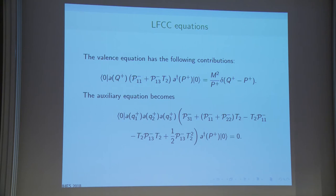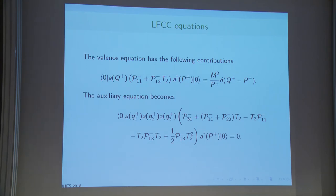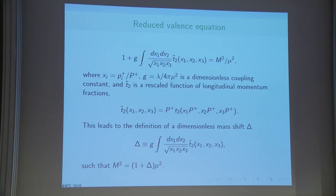Also, the kinetic terms are not the same. In LFCC, the physical mass appears for all constituents, but for this Fock state truncation the bare mass is used in the three-body sector — unless of course we apply sector-dependent renormalization. LFCC contains this vertex, which is a partial summation of all orders. To solve both the Fock state truncated and LFCC equations, we use fully symmetrical polynomials.